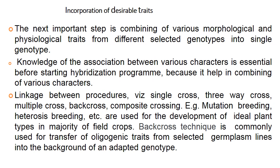The third step is incorporation of desirable traits. After combining various morphological and physiological traits from different selected genotypes into a single genotype, knowledge of the association between characters is essential before starting a hybridization program. Crossing procedures like single cross, three-way cross, multiple cross, backcross, composite crossing, mutation breeding, and heterosis breeding are used. In most crop plants, backcrossing is commonly used for transferring oligogenic traits from selected germplasm lines into the background of an adapted genotype.